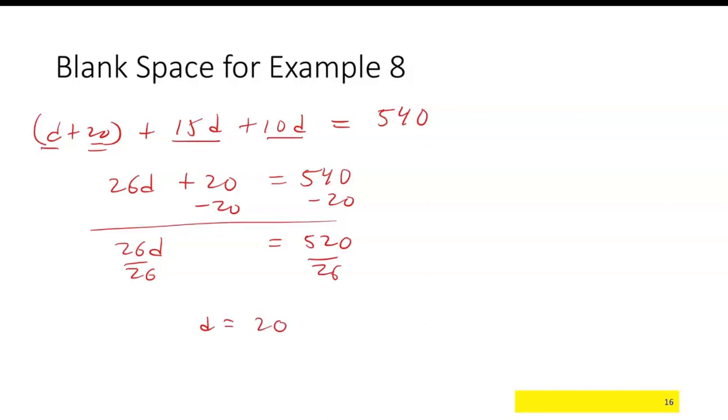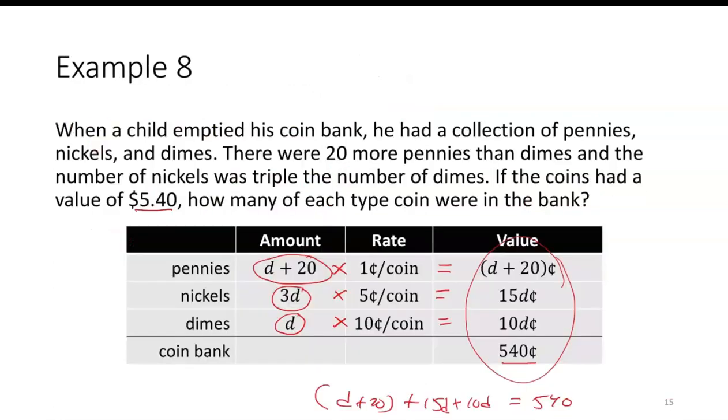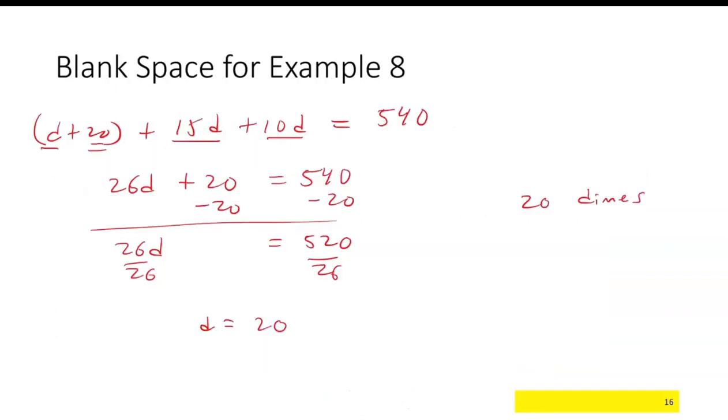So d was the number of dimes, so that tells you there were 20 dimes. And then going back, we had 20 more pennies than dimes, and triple the number of nickels as dimes. So 20 more coins than dimes would make it 40 pennies. And then triple the 20 gives you 60 nickels.